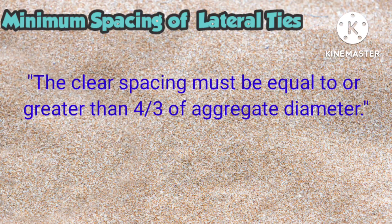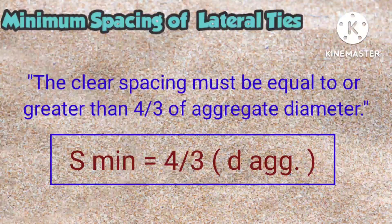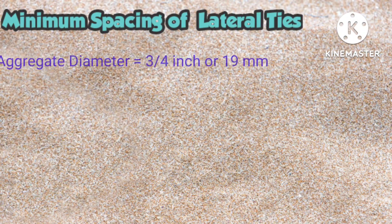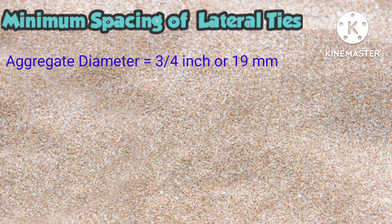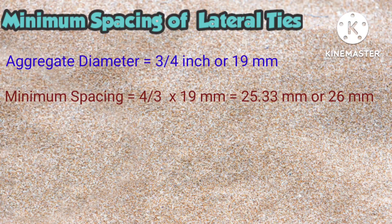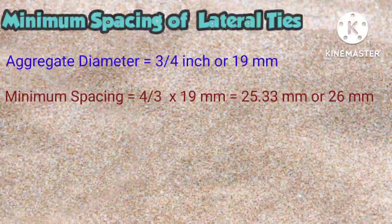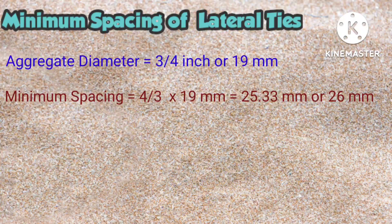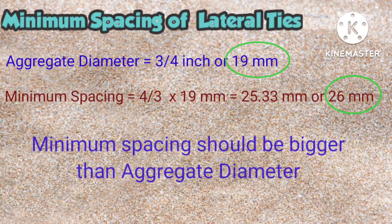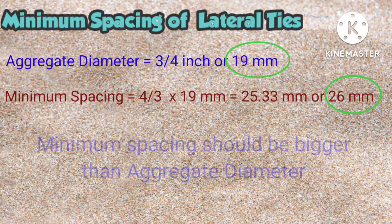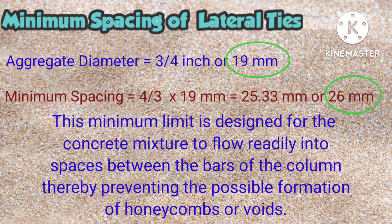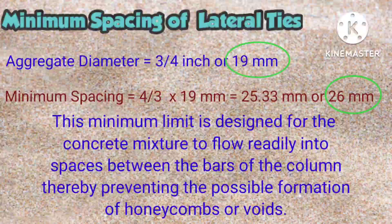Now to get the minimum spacing of lateral ties, the code specifies that the clear spacing must be greater than or equal to 4/3 of the aggregate diameter. Assuming we use an aggregate diameter of 3/4 inch or 19mm gravel, the minimum spacing will be 4/3 times 19mm, giving a value of 25.33mm, or approximately 26mm. This minimum limit ensures the concrete mixture flows readily into spaces between the bars, thereby preventing the possible formation of honeycombs or voids.